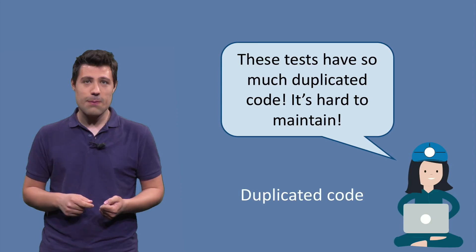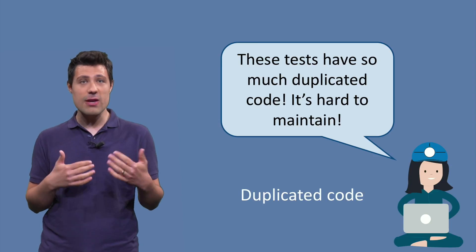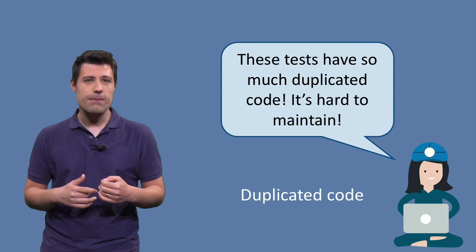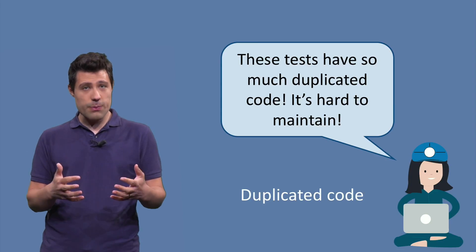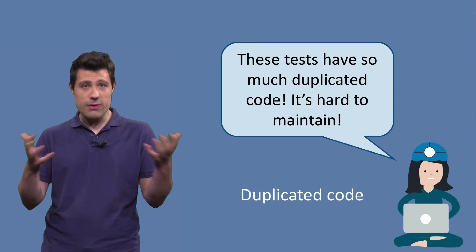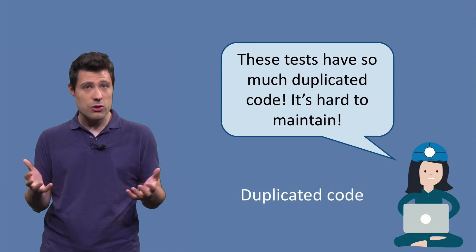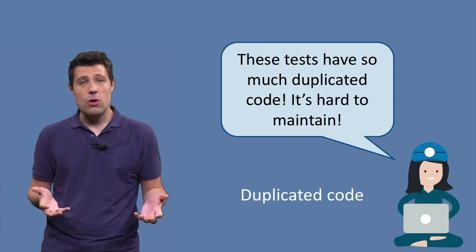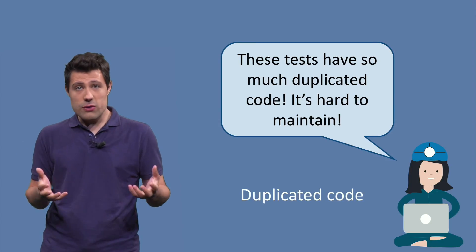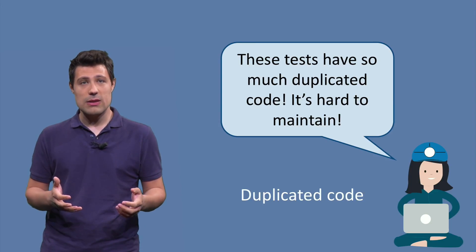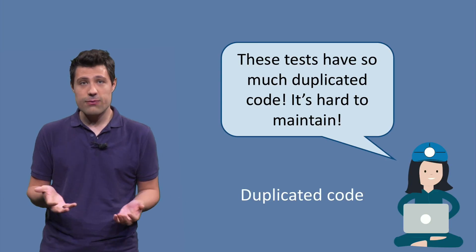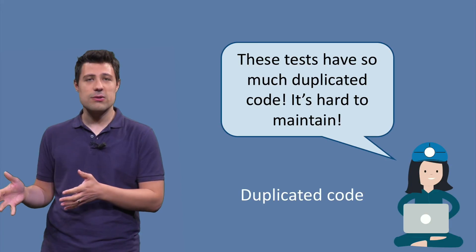In tests, duplicated code happens a lot when multiple tests depend on the same fixture, or on small differences over the same fixture. It is very common for developers, instead of coming up with abstractions, utility classes, private methods, or any other way to reuse code, to just duplicate. So every test method ends up with the same block of code. The impact on maintenance is the same as in production code — if you have to change in one place, you have to change in multiple places.